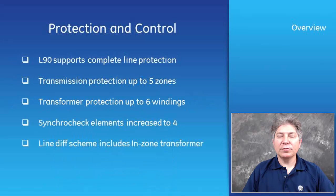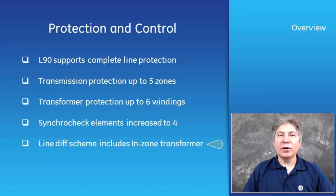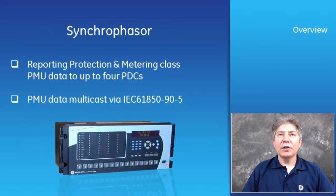Protection and control: The L90 supports complete line protection. Transmission protection up to 5 zones. Transformer protection up to 6 windings. Synchro check elements increase to 4. And line differential schemes include end-zone transformer. Synchrophasor reporting, protection, and metering class PMU data up to 4 PDCs, and PMU data multicast via IEC 61850-90-5.